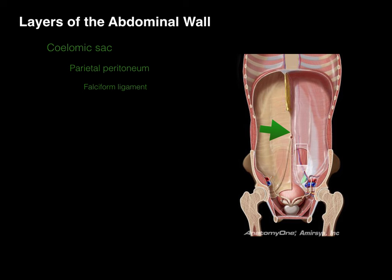The falciform ligament also arises from the umbilicus and courses up between the two lobes of the liver. It houses the round ligament of the liver, which is the fetal remnant of the umbilical vein — the vessel that carried oxygenated blood from the mother through the umbilical cord, through the umbilicus, and into the fetal circulation.